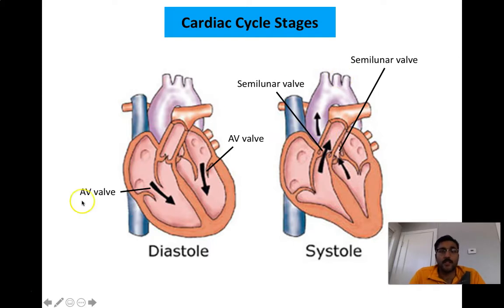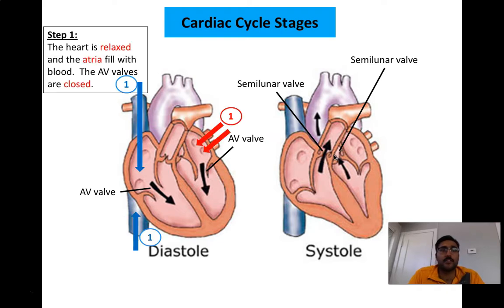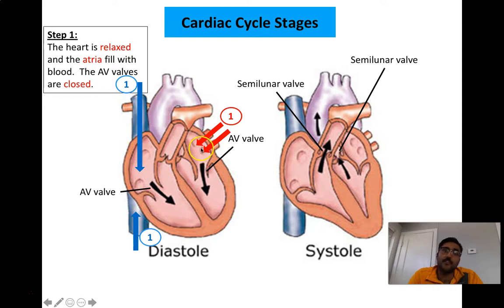There are some labels here — our AV valves and our semilunar valves. Let's break this down into steps. The cardiac cycle, at its simplest, occurs in four steps. Step one: the heart relaxes and the atria fill with blood. These top two chambers are going to fill with blood. The right atrium fills with deoxygenated blood from the inferior and superior vena cava. The left atrium at the same time fills with oxygenated blood from the pulmonary veins. The AV valves in that moment are going to be shut because the atria are trying to fill.